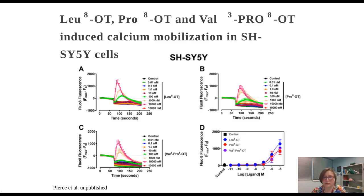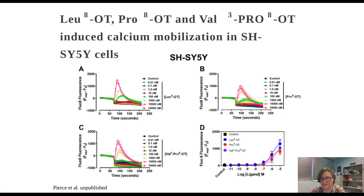Next, we assessed whether our three oxytocin peptides induce calcium mobilization at the oxytocin receptor in SH-SY5Y cells. Figure A shows the response for leucine-8 oxytocin, figure B for proline-8 oxytocin, and figure C for val-3-pro8 oxytocin. Figure D shows the potency and efficacy of these three oxytocin analogs. At this point, all three have relative potency and overlapping efficacies, demonstrating no statistically significant difference in either potency or efficacy between the three.